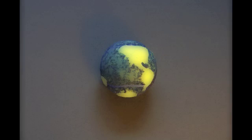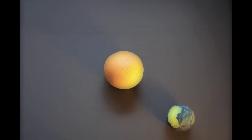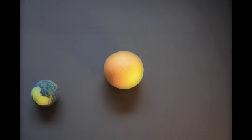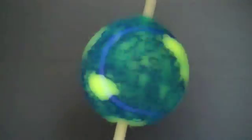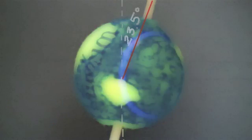See, the seasons have nothing to do with earth's distance to the sun. It has to do with the tilt of earth's axis. See, this earth doesn't spin like this. It spins on an angle, 23.5 degrees to be exact.